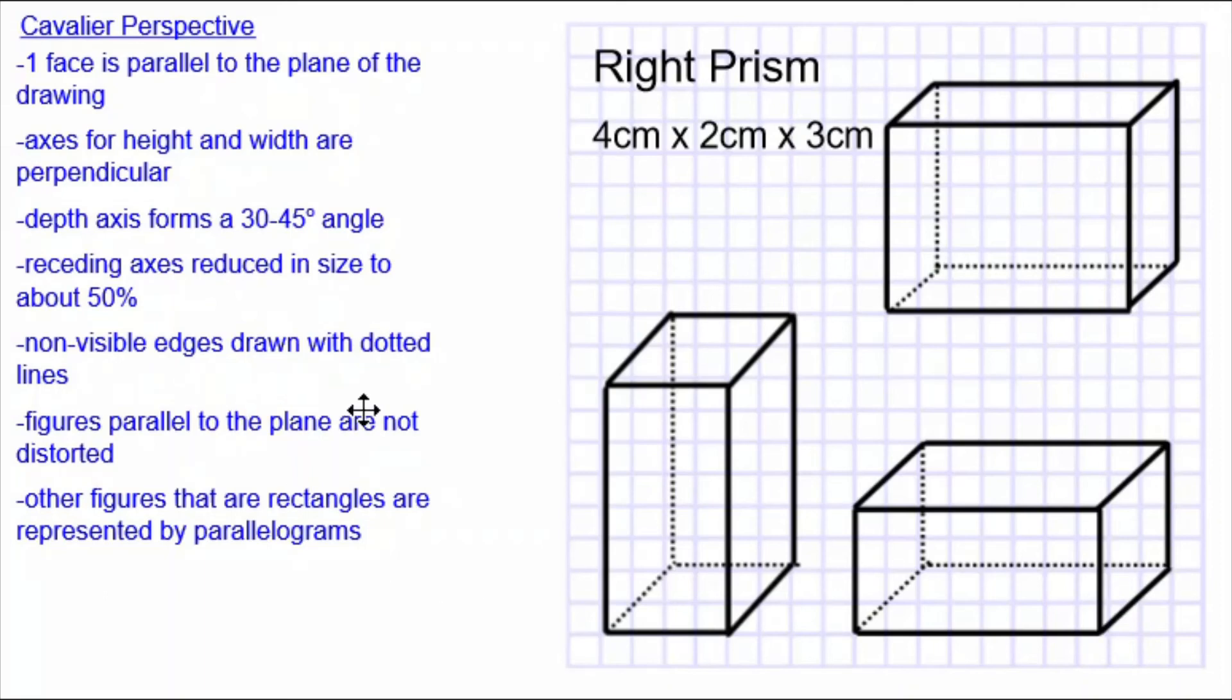The non-visible edges are drawn with dotted lines. Figures parallel to the plane are rectangles in all three cases. But the other figures, which really are rectangles in reality, are represented with parallelograms. All three of these drawings obey the rules for a cavalier perspective drawing of a right prism, which is four centimetre by two centimetre by three centimetre.